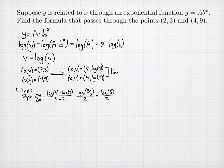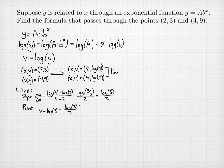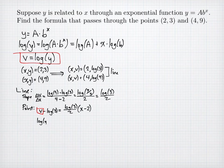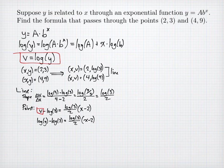To find the equation I use the first point (x, v) = (2, log 3): v minus log 3 equals (log 3 / 2) times (x minus 2). Substituting v back as log y: log y minus log 3 equals (log 3 / 2) times (x minus 2).